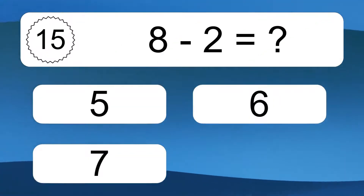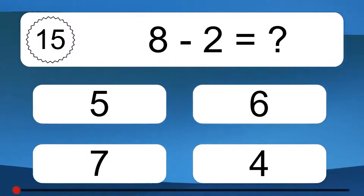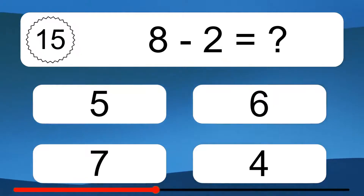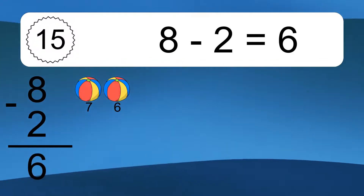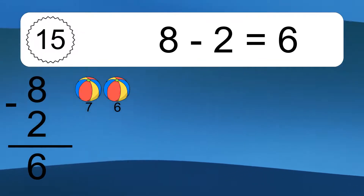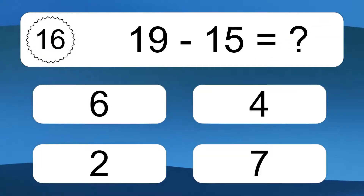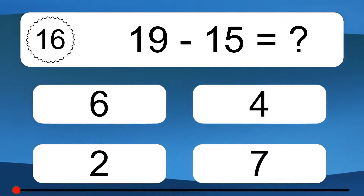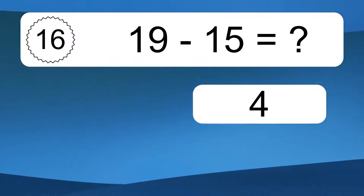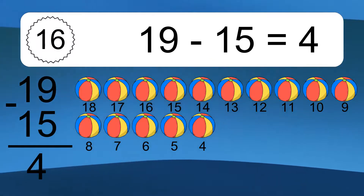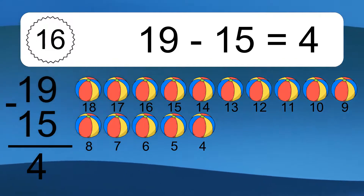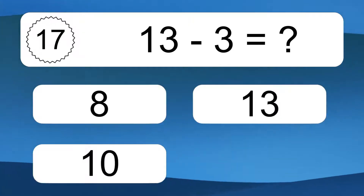8 minus 2 equals what? 8 minus 2 equals 6. Let's count it: 7, 6. 19 minus 15 equals what? 19 minus 15 equals 4. Let's count it: 18, 17, 16, 15, 14, 13, 12, 11, 10, 9, 8, 7, 6, 5, 4. 13 minus 3 equals what?